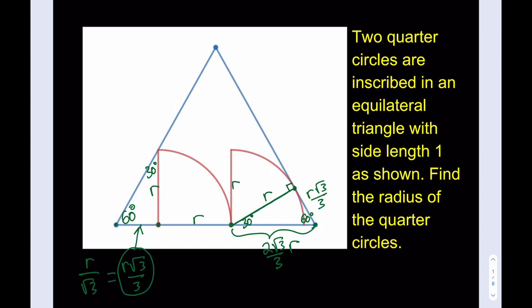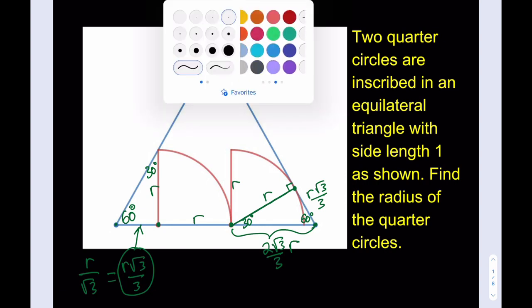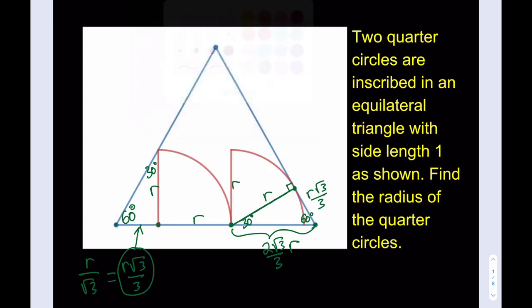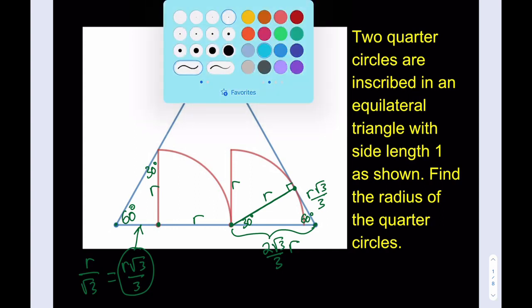And what happens if you put them all together? You'll get the side length for the equilateral, which we know is 1. So we can go ahead and proceed from this point on, like with this one.